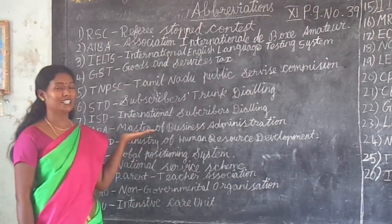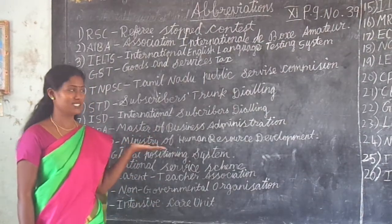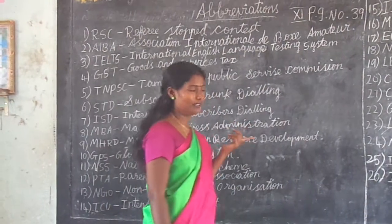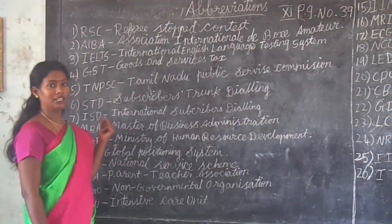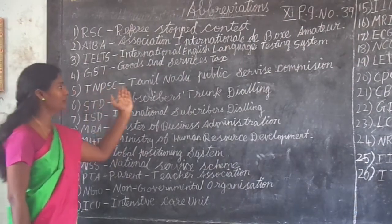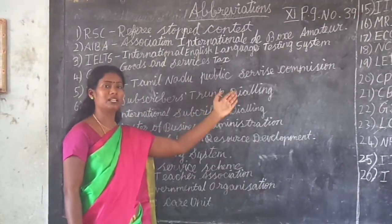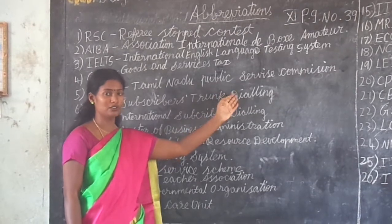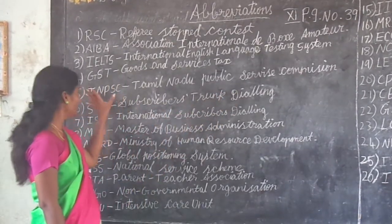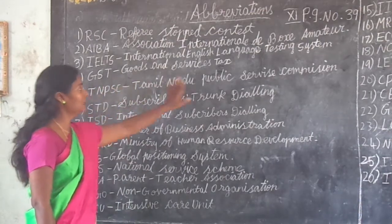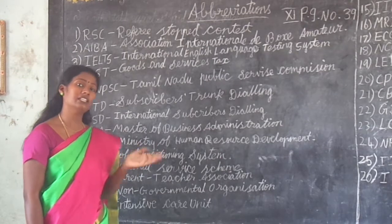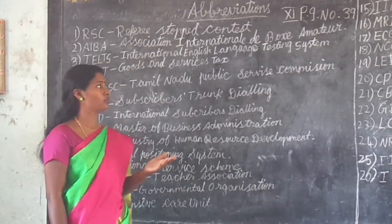This number is abbreviations. This is page number 39. Abbreviations means that a short term is called abbreviation and expansion is called expansion. Every abbreviation has a short form called abbreviation and its full form is called expansion. Write the abbreviations and write the expansion for each.